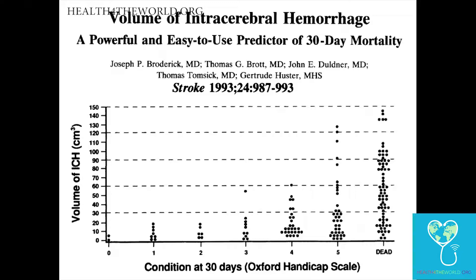We've known for a long time that the larger the hemorrhage, the lower the likelihood of favorable outcome. This is from an early publication that looked at this, using the Oxford Handicap Scale — though we now tend to use the Modified Rankin Scale. As hematomas get bigger, the likelihood of favorable outcome decreases. That said, it's not perfect — patients with smaller hematomas can also die depending on location. A smaller hematoma in the brainstem can be very, very bad. Overall, calculating hematoma volume is very useful and is a component of the ICH score.